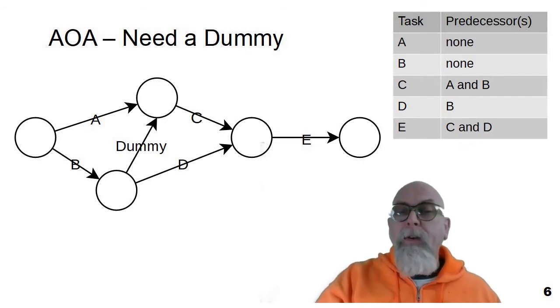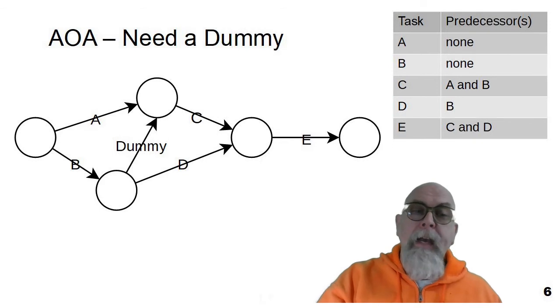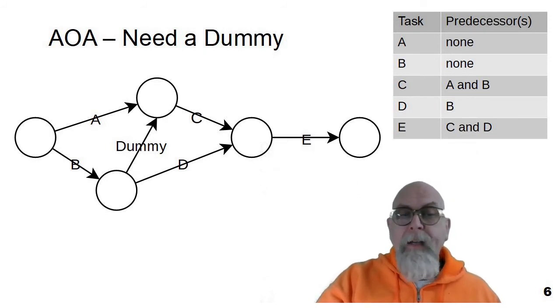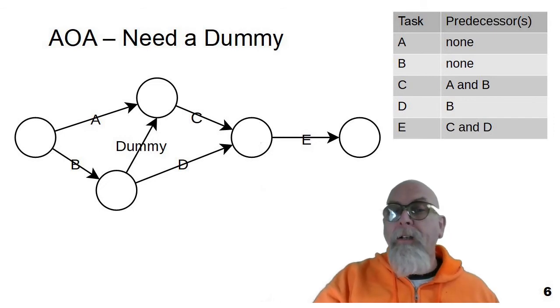And the reason why we couldn't combine just B over to the same node as A is because you can see that D is dependent upon B alone, but C is dependent upon A and B, and to model this, we needed to add the dummy activity or the dummy arrow to make this AOA diagram really represent the network as described above in the problem.